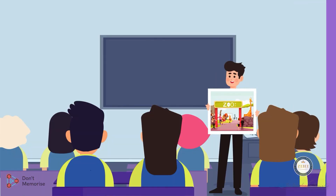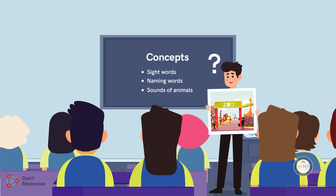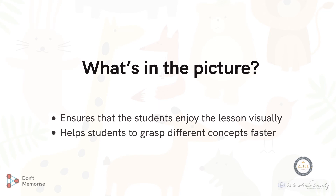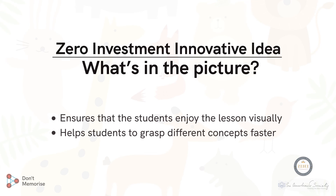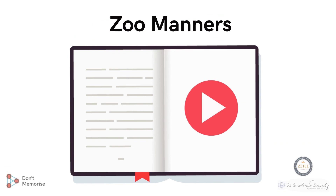Thus, with the use of this activity we've covered the concepts of sight words, naming words, and the sounds of animals. Wasn't it really interesting to see how we can teach so many concepts using just one picture card? This creative aspect of the idea 'what's in the picture' ensures that the students not only enjoy the lesson visually but also grasp the different concepts faster. Let's implement this innovative idea further in our next session, where we will be explaining more concepts.